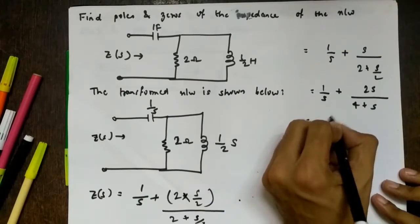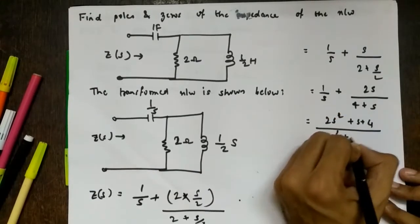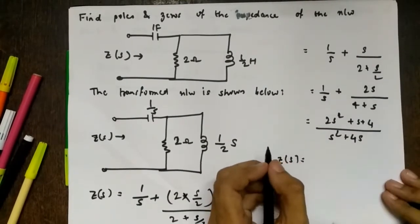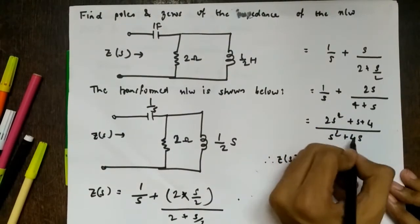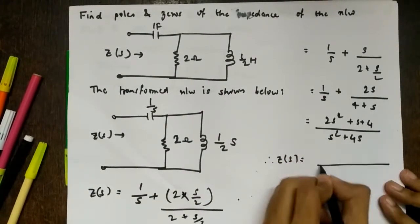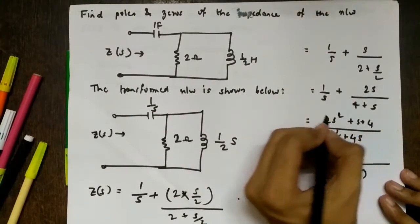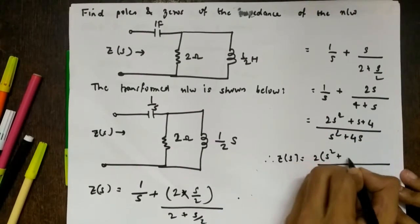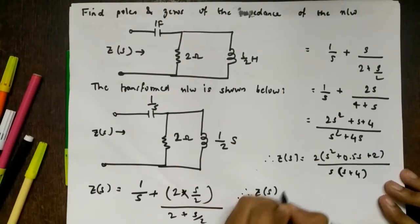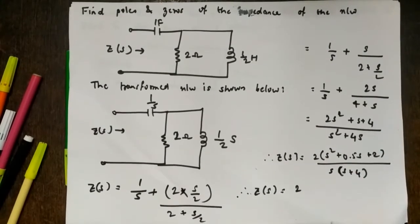Taking the LCM and simplifying, we get Z(s) = (2s² + s + s + 4) / (s² + 4s), which further reduces to 2(s² + 0.5s + 2) / [s(s + 4)]. We need this in factored (reduced) form to identify poles and zeros. Factoring the numerator quadratic using the quadratic formula gives complex roots.